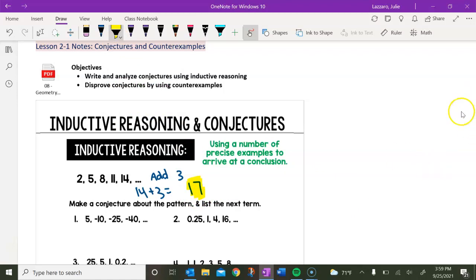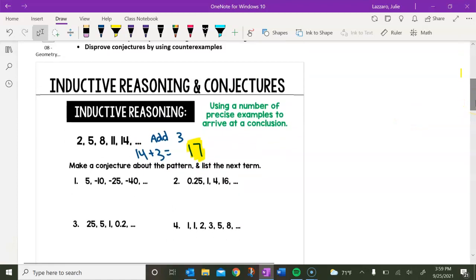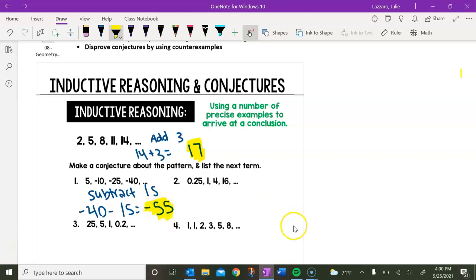So let's take a look at two more of these types of examples. So let's look here at number one. We've got five, negative 10, negative 25, and negative 40. What's happening each time when we get from five to negative 10, negative 10 to negative 25, negative 25 to negative 40. Well, we are subtracting 15 every time. So what is the next term? Well, if I do negative 40 minus 15, I get negative 55. That is the next term in this pattern.